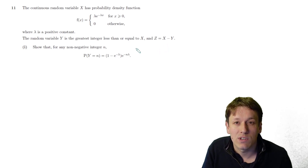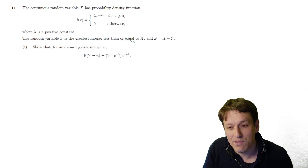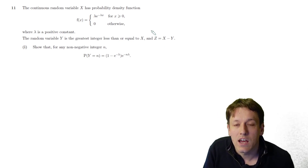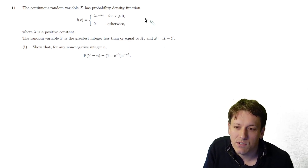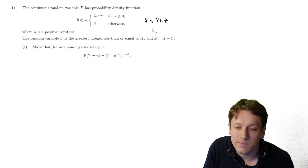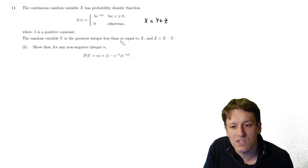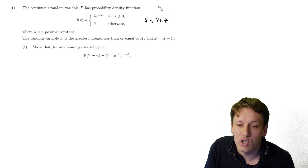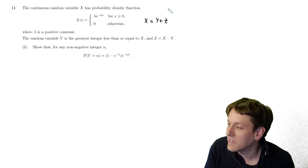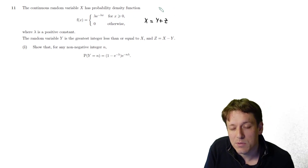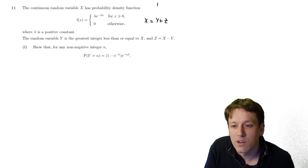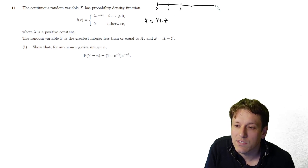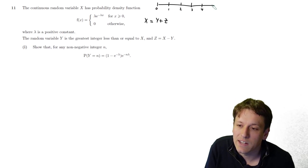It's really worth spending a few seconds — minutes even — to get your head around what's going on here. Perhaps it's easier to write this as X = Y + Z, so Y is the greatest integer less than or equal to X, and Z is kind of what's left over.